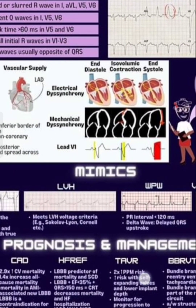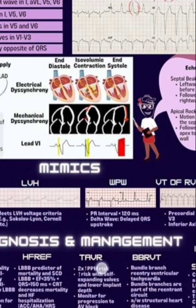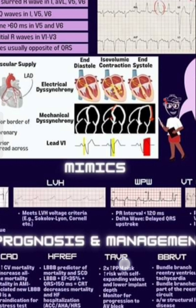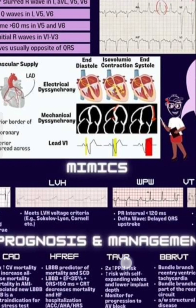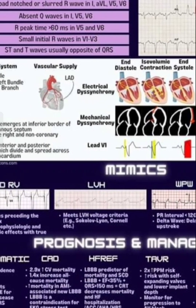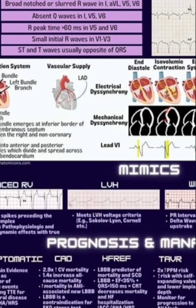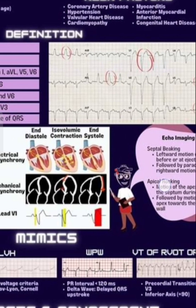To not miss MI in LBBB, apply the Sgarbossa criteria: (1) concordant ST elevation of 1 mm or more in one or more leads; (2) concordant ST depression more than 1 mm in leads V1, V2, or V3; (3) proportionally excessive discordant ST elevation in more than one lead where ST elevation is more than 25% of the depth of the preceding S wave — this criterion is 80% sensitive and 99% specific for MI in LBBB.